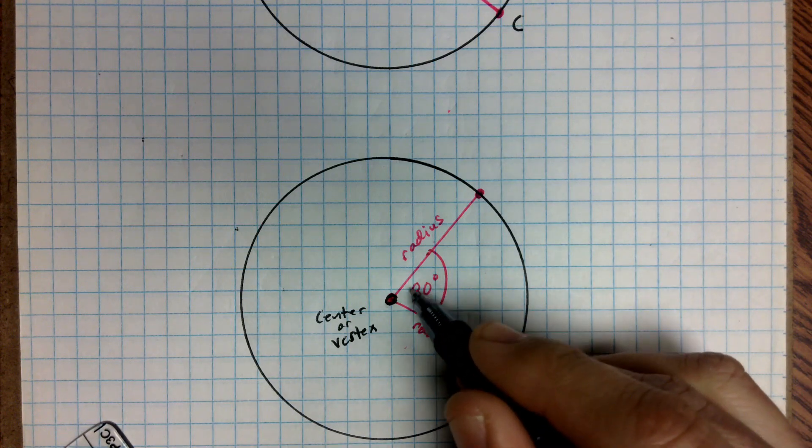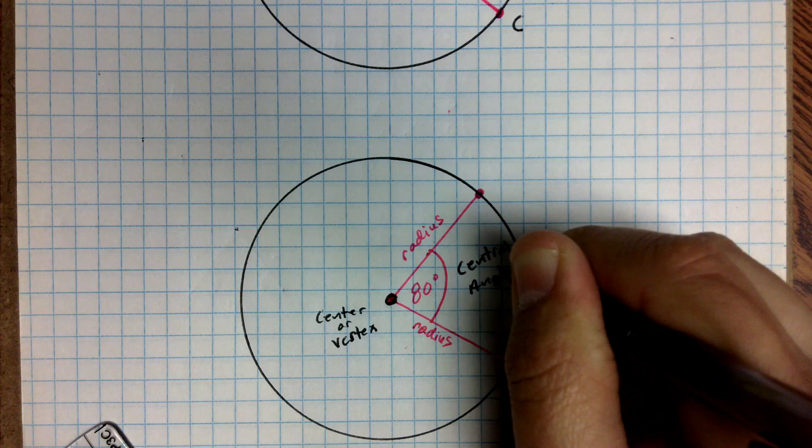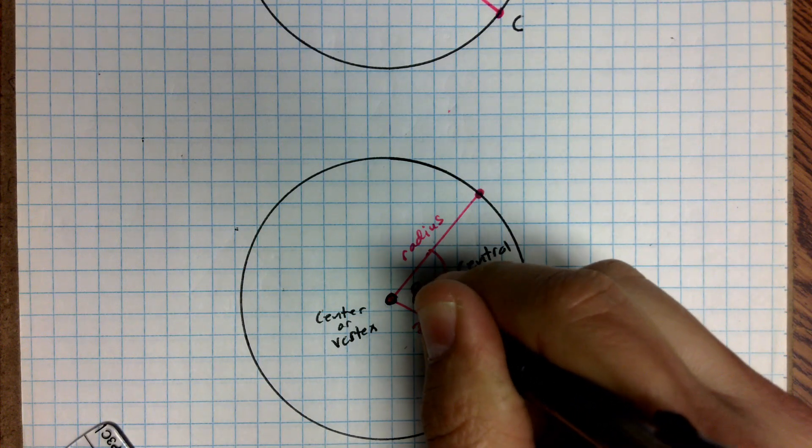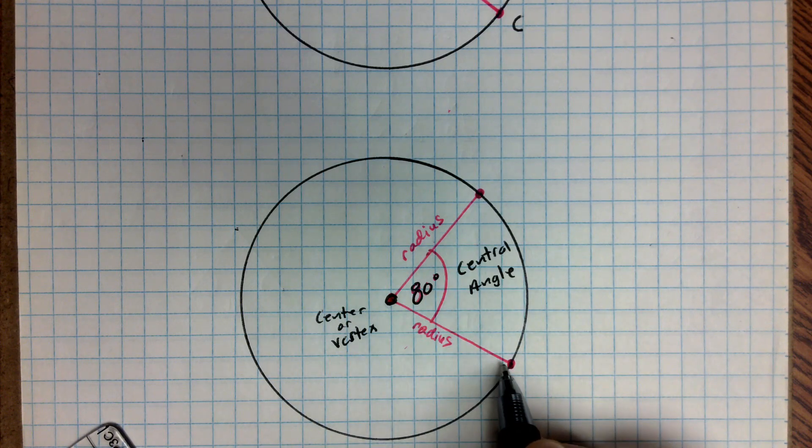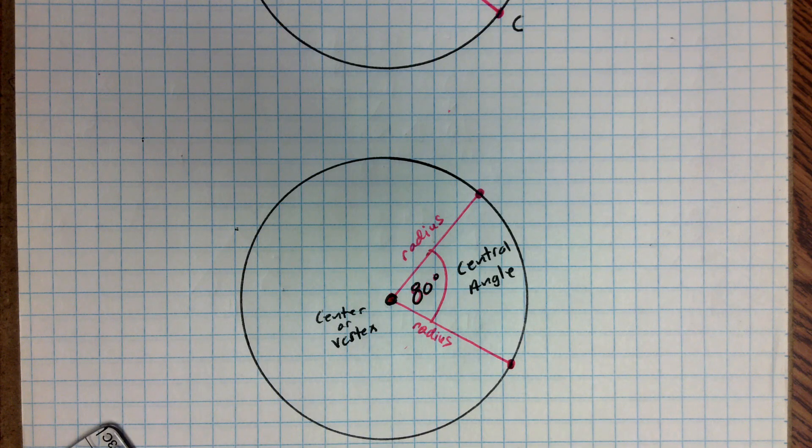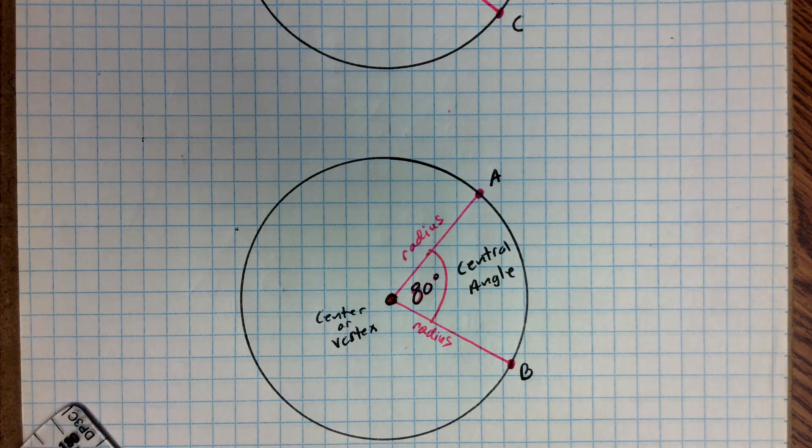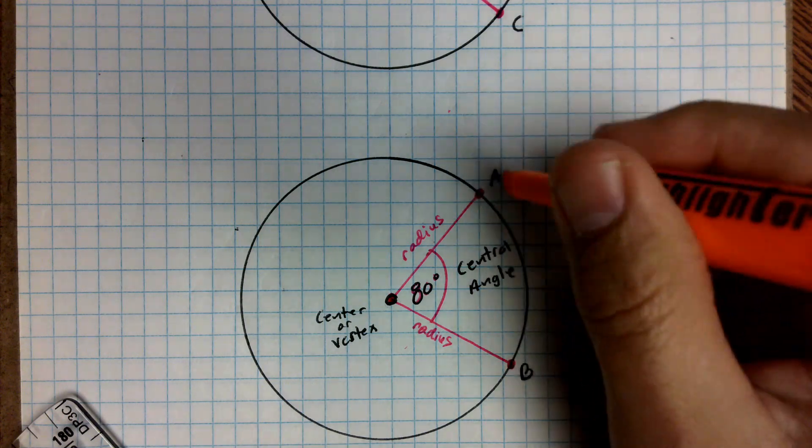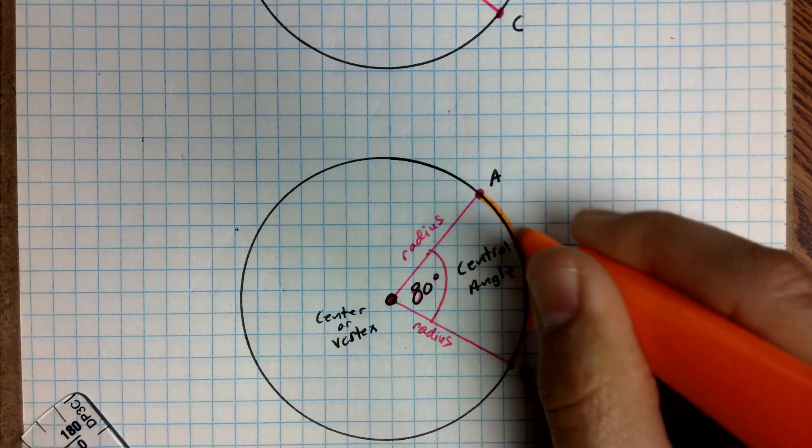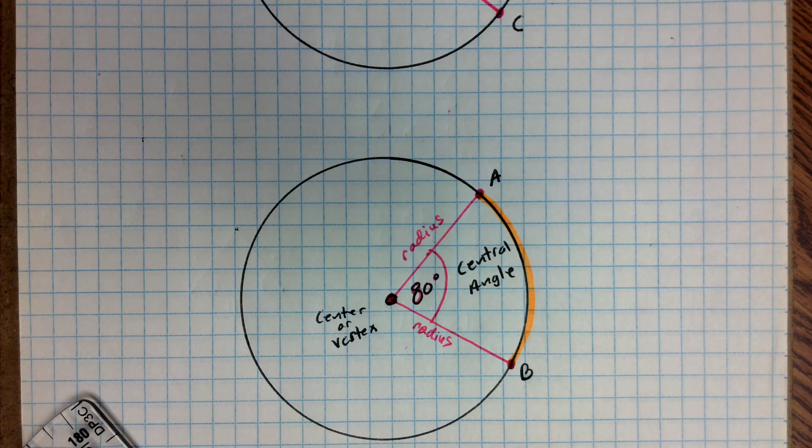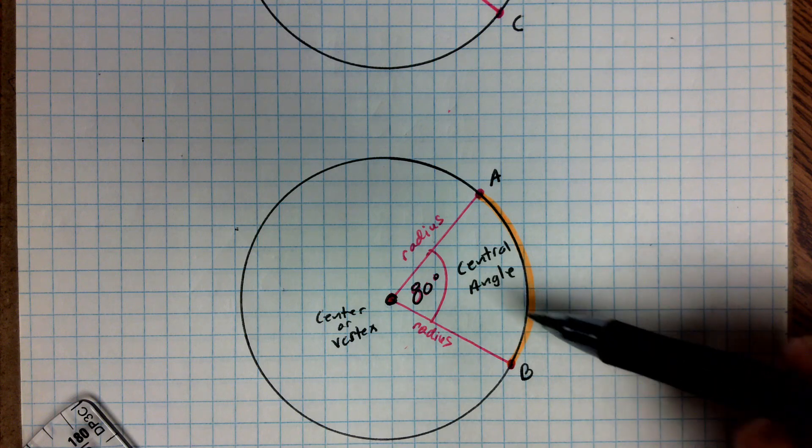And this angle right here on the inside, we're going to call that the central angle. In other words, the 80 degrees is the central angle, because it is the angle of these particular radius that I connected. Now we'll call this A over here, and call this B over here. There's a component on here, and that component is going to be called an arc. It's basically this section of a circle. In other words, think about it as a piece of a circle that has a relationship with this angle here and this center point. And that's what we're going to be talking about today.